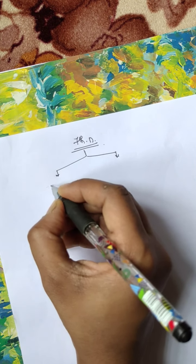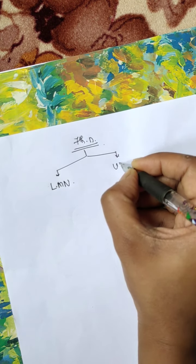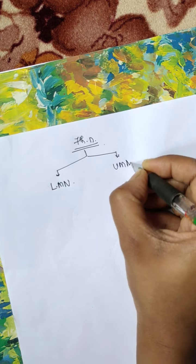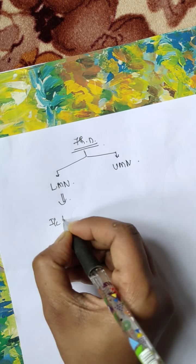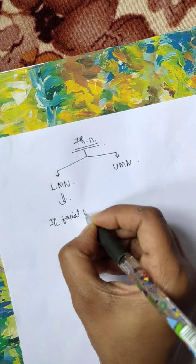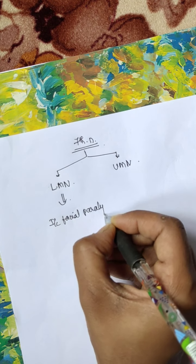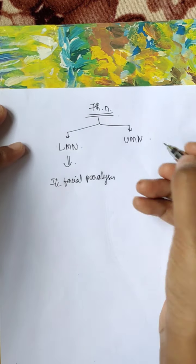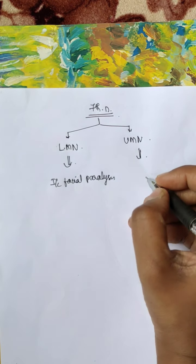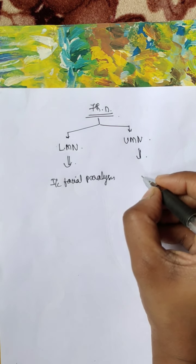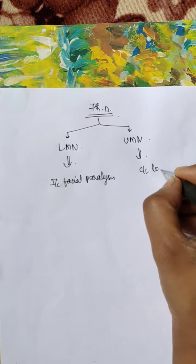The 7th nerve injury can be of two types: LMN type and UMN type. In LMN type, it is ipsilateral facial paralysis. In UMN type, it is the ipsilateral lower half of the face that is affected.